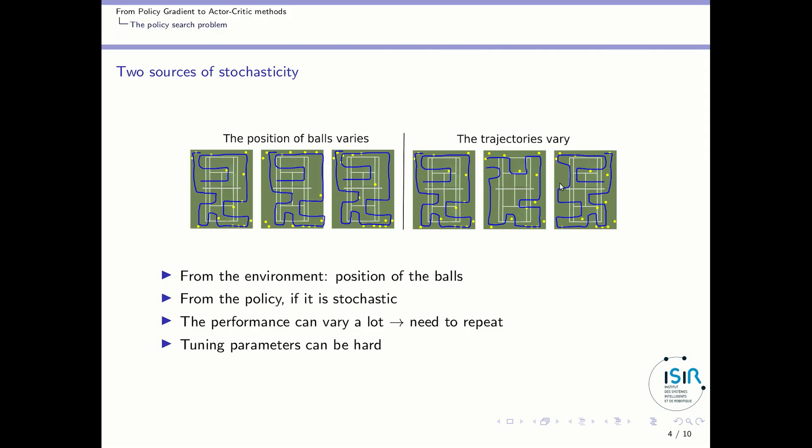The other source of stochasticity can be the policy itself. For the same position of balls the same controller may turn in different places so generate a different trajectory. So if you think of it the performance of our robots can vary a lot from situation to situation. So to estimate the performance we will need to repeat and to take several trajectories to have an idea of whether that parameter is better than this one. So tuning the parameters can be very hard because we need to repeat the trajectory several times to get an idea of what is good and what is bad.